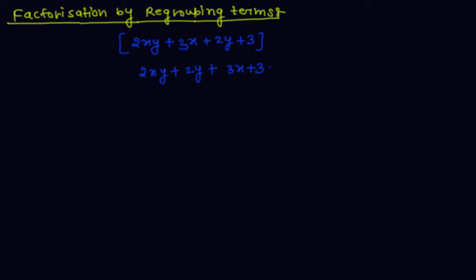Now, if you notice, these two terms have 2y common. So taking 2y out, only (x plus 1) is remaining in the bracket. In the other two terms, 3 is common, and the remaining in the bracket is again (x plus 1).